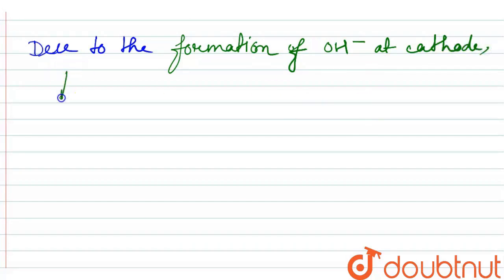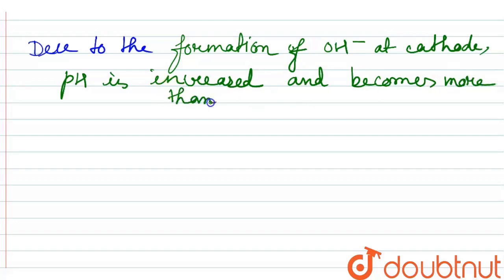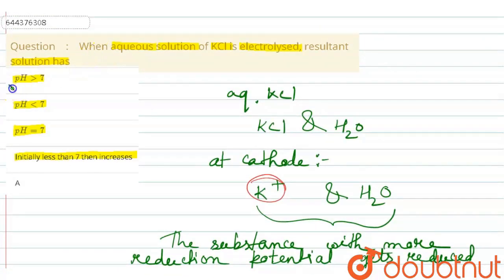Due to the formation of OH minus at cathode, pH is increased and becomes more than 7. So the correct option will be option 1. Hope you all got my points. Thank you.